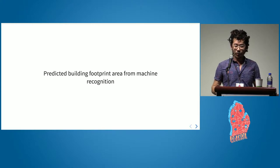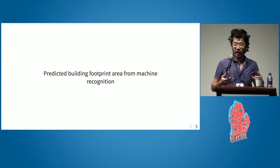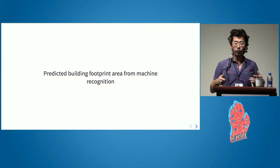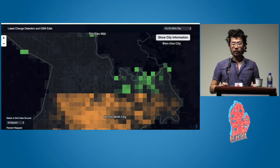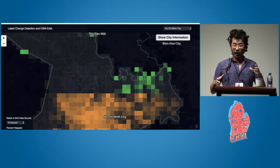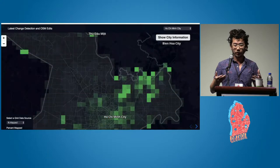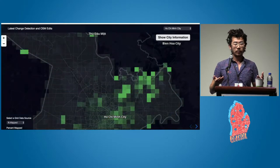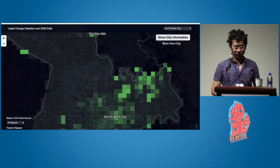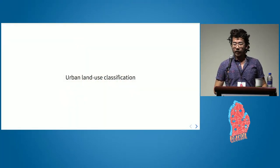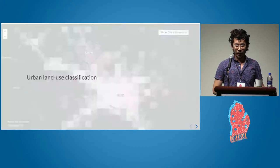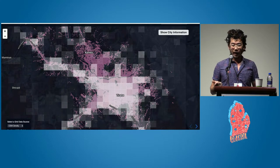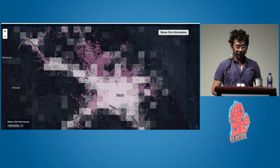Those are two of the main things we think this could be useful for. There are a couple of other things we're using as complements to change data and OSM data. One is using a machine recognition and learning process to figure out where we think there are buildings that aren't mapped and how much building footprint area is actually there. From that we can see: we know there's this much OSM data here, and we know a lot of this area isn't mapped — but is it not mapped because there's nothing there, or because it just hasn't been mapped yet? These are where buildings exist that have yet to be mapped by somebody. Another thing we're using is an urban land use classification layer to see where the urban areas that are unmapped are.